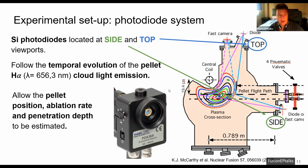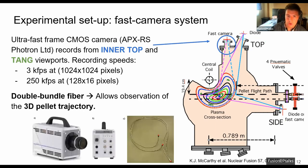In this manner, we can estimate the pellet position, the ablation rate and the penetration depth of the pellets. To conclude, I also use the TJ2 fast camera system which was recently upgraded with a double bundle fiber that allows the simultaneous recording from top and tangential viewports which is tangential to the pellet flight path and therefore it allows the observation of the three-dimensional pellet trajectory.